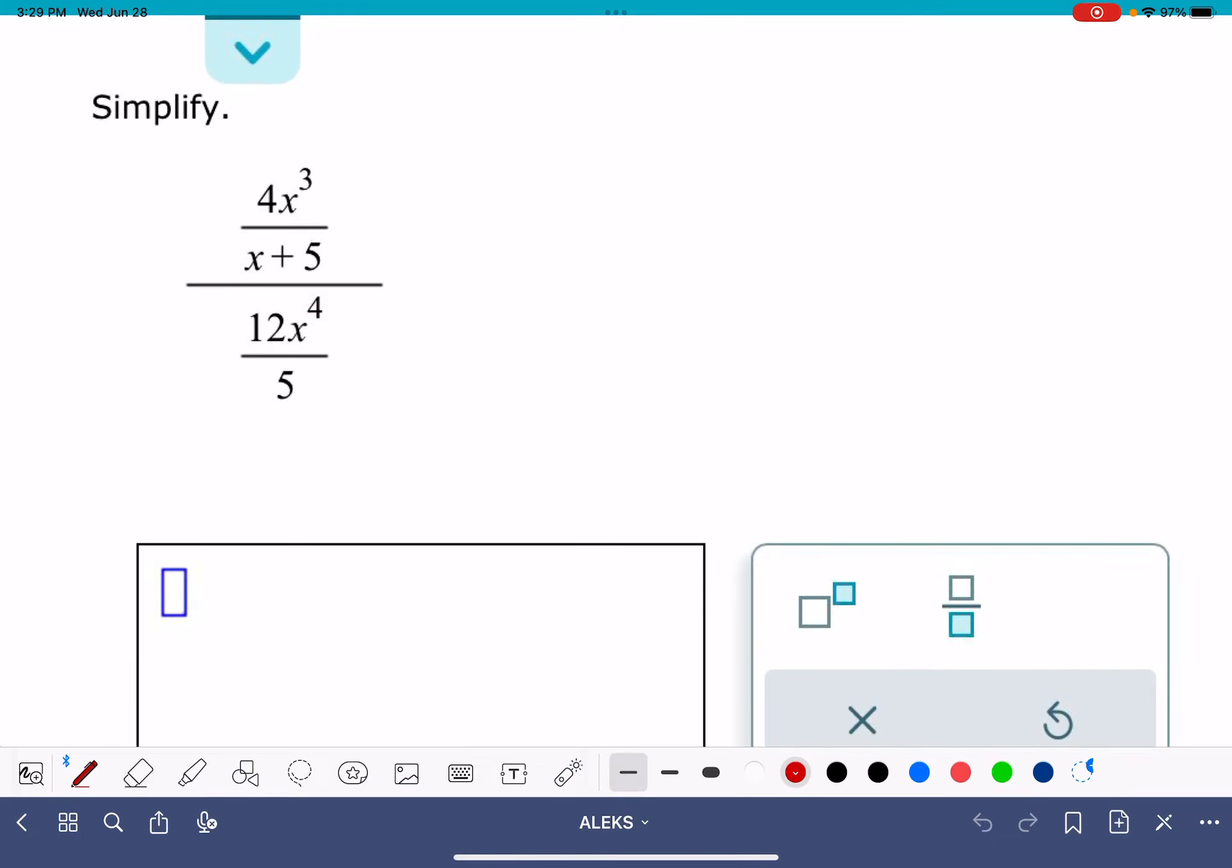I like to start this problem by getting rid of the denominator, and to do that, I'm going to multiply both the numerator and the denominator by the reciprocal of the denominator. My denominator is 12x to the 4th over 5. I'm going to be multiplying the top and the bottom by the reciprocal, 5 over 12x to the 4th.